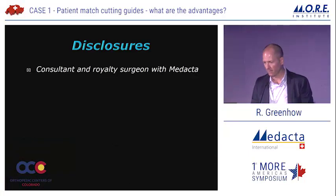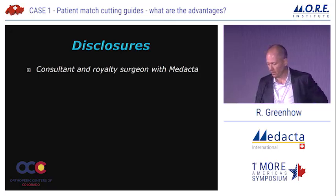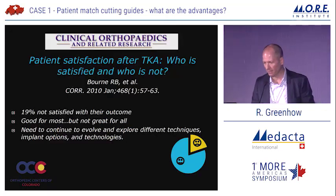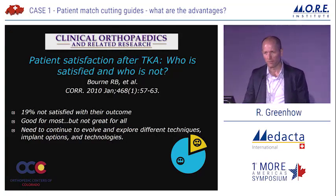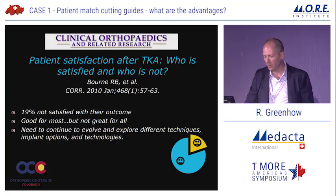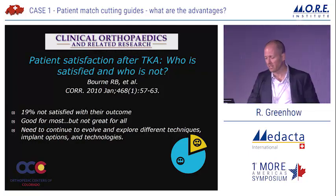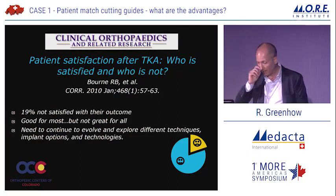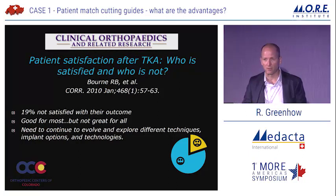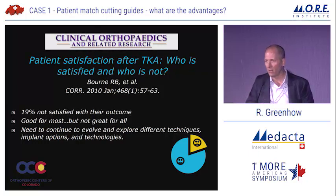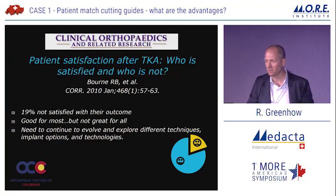What are the advantages? These are my disclosures, which are relevant, related to my knee. Bob Bourne from London, Ontario was one of my mentors, and he published a study looking at a cross-section of 1,700 total knees across southwestern Ontario and found a 19% dissatisfaction rate. This study's been replicated around the world. We have a procedure that's good for most, but not great for all. We need to continue to evolve and explore different techniques, implant options, and technologies.